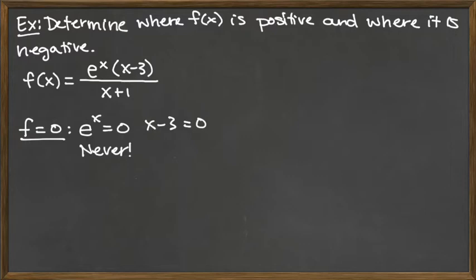So the other factor, x minus 3 equals 0 gives us x equals 3 is the root. That's where f is 0. The other thing we have to pay attention to is where it is undefined.